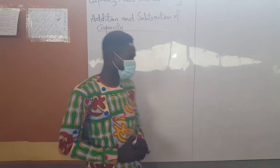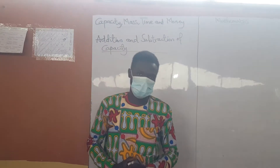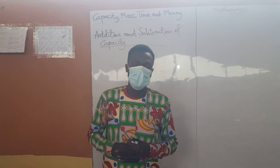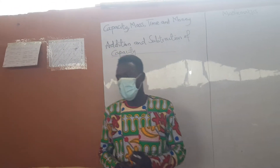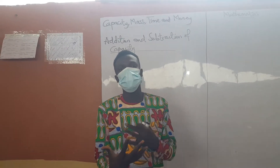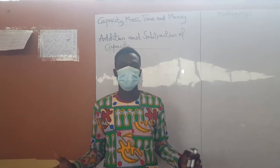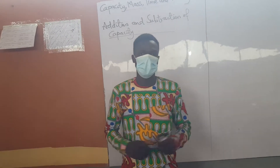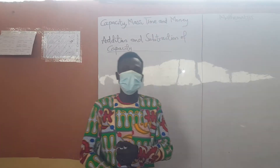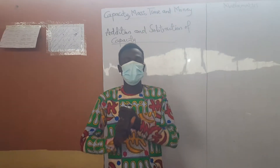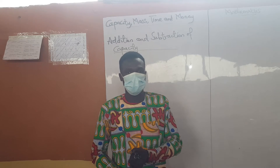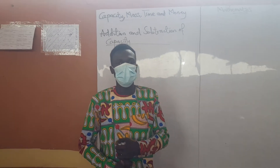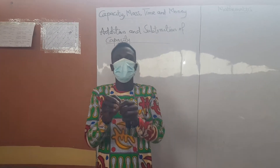Today we want to look at capacity, miles, time and money. But today in particular we want to look at addition and subtraction of capacity. One will ask, what is capacity? Capacity simply means the amount of substance that a container can hold. Capacity is measured in liters for huge containers and in milliliters for small containers.